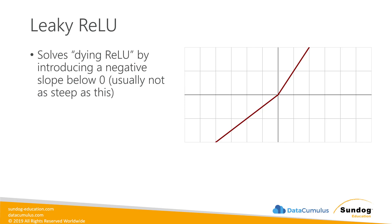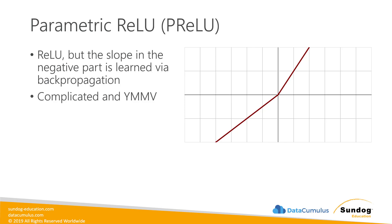But how do you know what slope is best for leaky ReLU? You can decide arbitrarily, and some people do. But a better way is something called parametric ReLU, or PReLU for short. This is exactly the same as leaky ReLU, except the slope in the negative part is learned via backpropagation itself — so as we learn all the weights, we're also learning the optimal slope for that negative portion. The downside is that this is computationally intensive. In the majority of cases, straight ReLU or a constant leaky ReLU will fit the bill, but PReLU is worth exploring if needed.